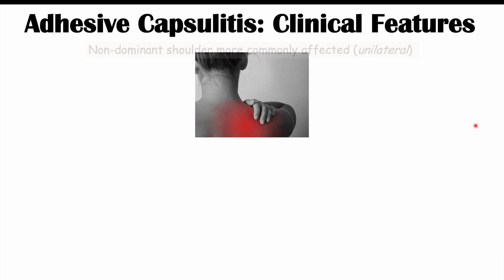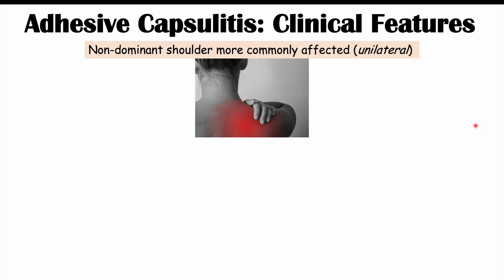Regarding the clinical features of adhesive capsulitis: the non-dominant shoulder is more likely to be affected. This condition is typically unilateral, meaning it affects only one shoulder, although bilateral cases can occur in rare instances — often related to the non-dominant shoulder being less utilized. The hallmark findings are pain and stiffening, occurring in a particular pattern across three phases.